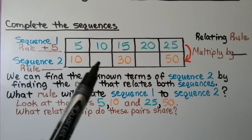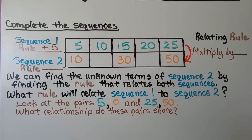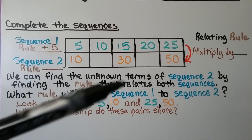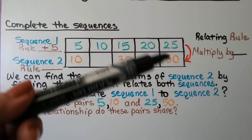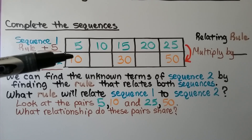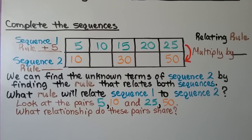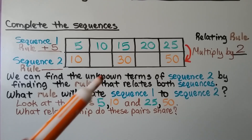There are missing terms in sequence 2 as well. We don't have enough information to finish it or write its rule on its own. But we can find the unknown terms of sequence 2 by finding the rule that relates both sequences. We look at the pairs 5 and 10, 15 and 30, and 25 and 50. What relationship do these pairs share? What do we need to do to 5 to make it 10, or to 15 to make it 30? If you said multiply by 2, you're right. The rule that relates sequence 1 to sequence 2 is multiply by 2, which means we can fill in the unknown terms.